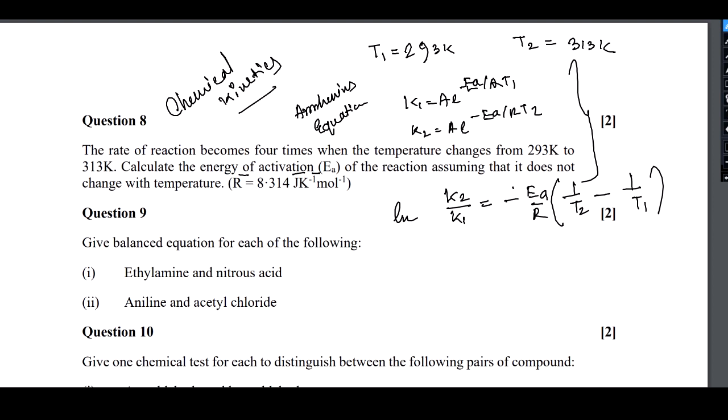We can write k1 equals A e to the power minus Ea by RT1, k2 equals A e to the power minus Ea by RT2. After taking ln on both sides, we get ln of k2 by k1 equals minus Ea by R times (1 by T2 minus 1 by T1). Now T2 and T1 we know: 313 and 293 Kelvin. K2 and K1: it is mentioned that the rate becomes 4 times, so K2 equals 4K1.